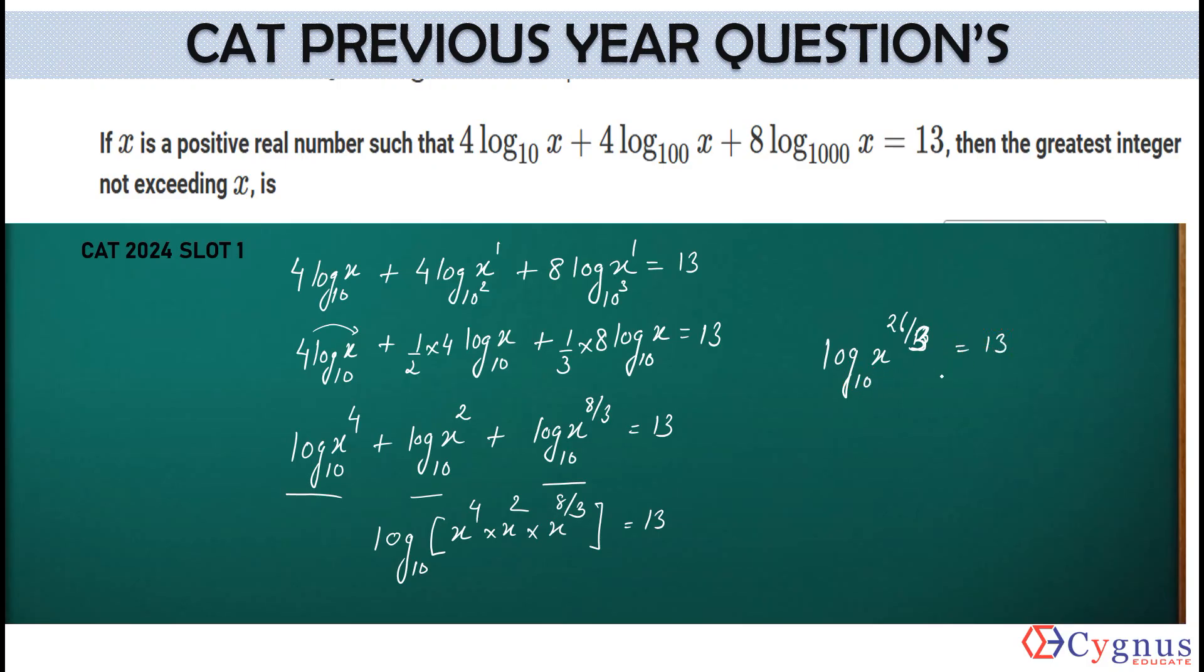Now, how do we write it? When you try to convert this exponential form, you get x to the power 26 by 3 is equal to 10 to the power 13. Now, let's try to convert this in terms of 13 here. Can we write it like this? x to the power 2 by 3 raised to the power 13. Effectively, it becomes 26 by 3 is given equal to 10 to the power 13. So, this 13, 13 will be cancelled out. It will be left with what? x to the power 2 by 3 is equal to 10.